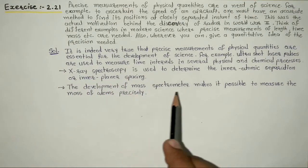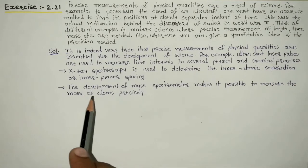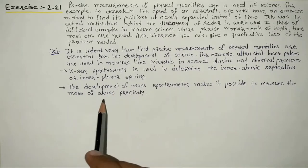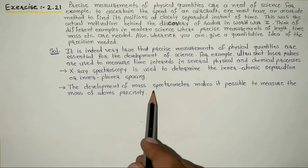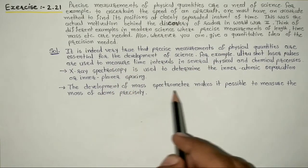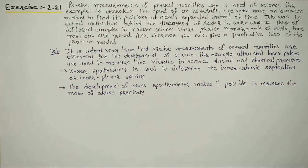The development of mass spectrometer makes it possible to measure the mass of atom precisely. Mass spectrometer is a very useful instrument for precisely measuring the mass of an atom. These are examples where physical quantity measurement is done very precisely.